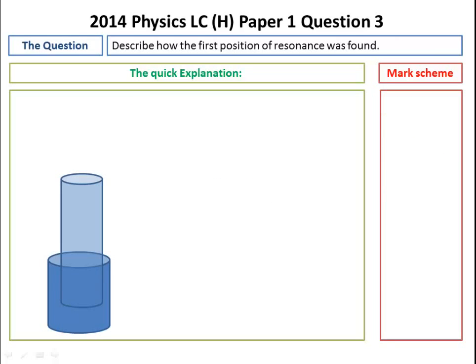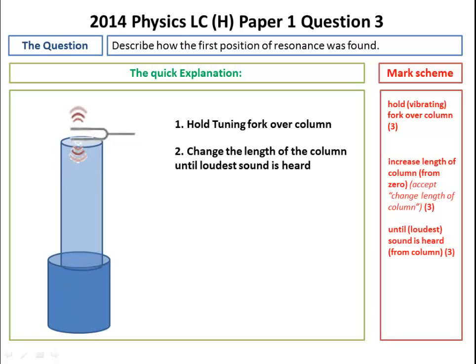The next bit says to describe the first position of resonance. That's basically saying, all right, how do I do this experiment? Let's do it. So we hold the tuning fork over the column. That gives us three marks. You change the length of the column until the loudest sound is heard. So move the pipe up and down, and then you should hear like a kind of a hoverbike noise. And then you've achieved resonance.